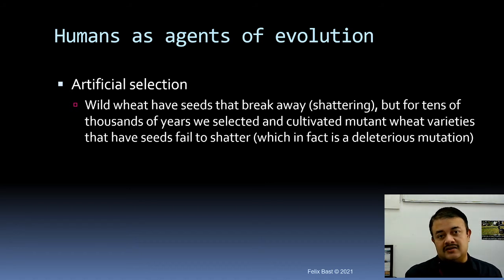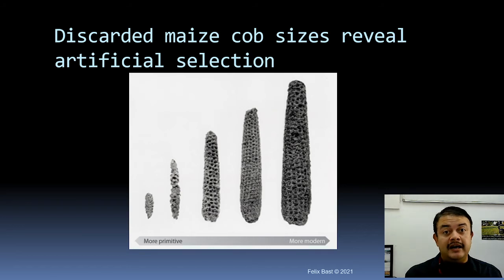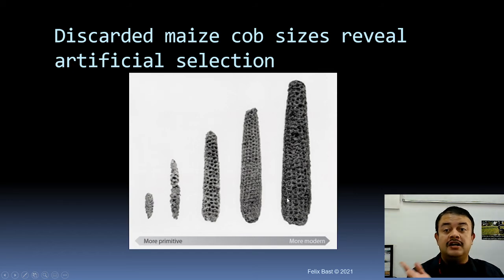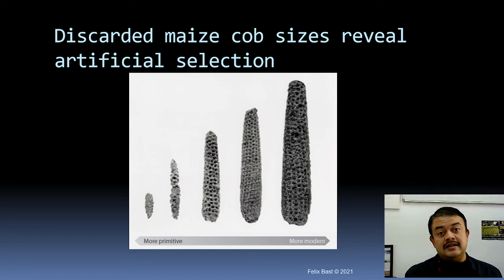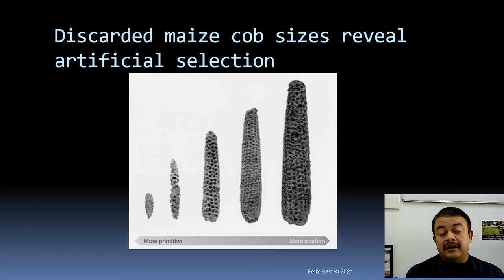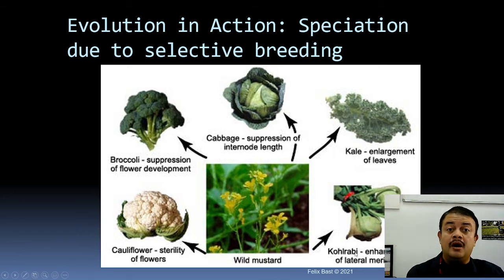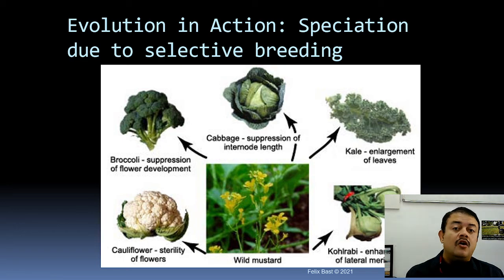For example, pedigree cats and dogs often have compromised immune systems due to selective breeding. Artificial selection is very common in plant and animal breeding. Corn maize cobs were very small primitively but are now much larger. Chicken eggs have also increased in size because we select chickens that lay bigger eggs — all consequences of artificial selection.